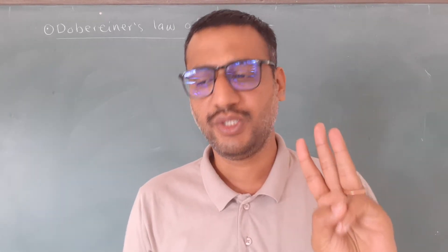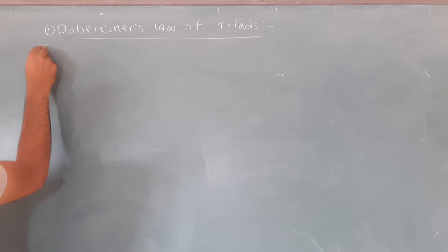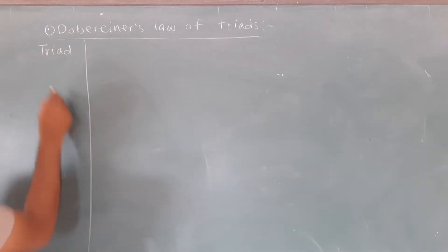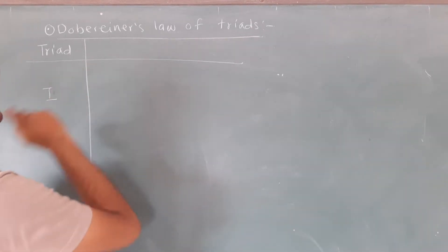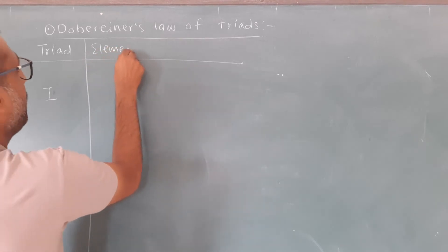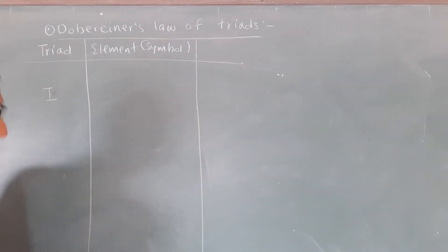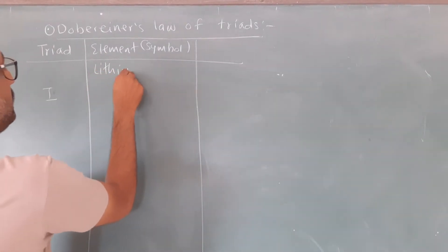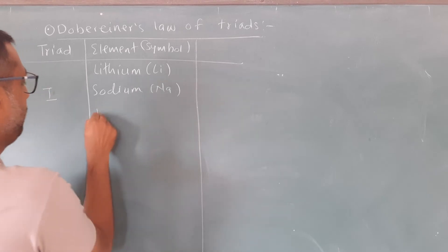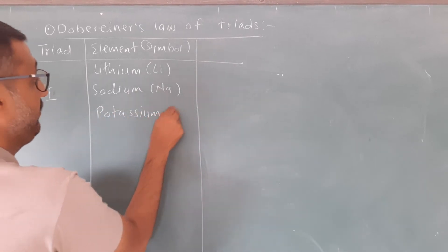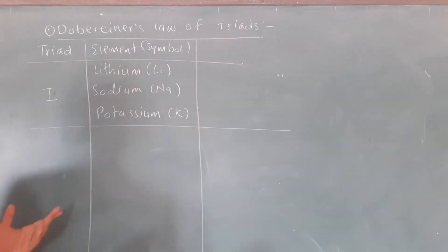Dobereiner made a group of three elements with similar properties and called them a triad. The first Dobereiner's triad consists of the elements lithium (Li), sodium (Na), and potassium (K). A group of three elements with similar properties — that is the triad.